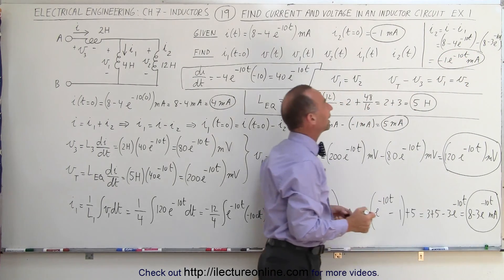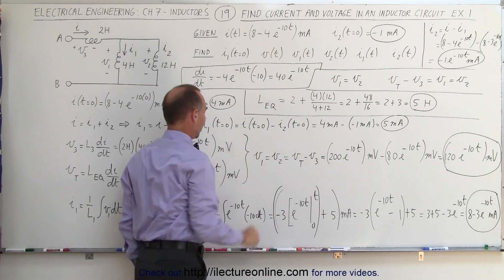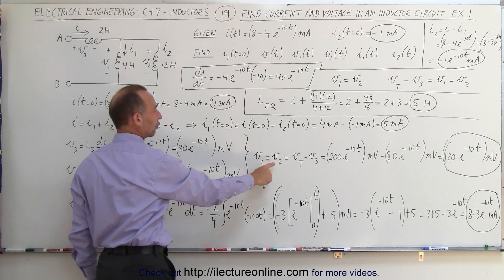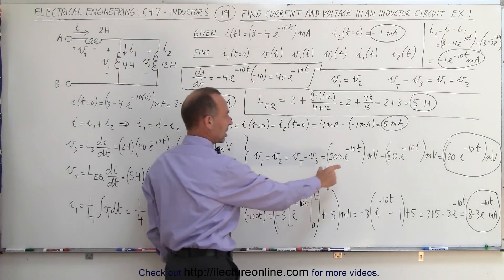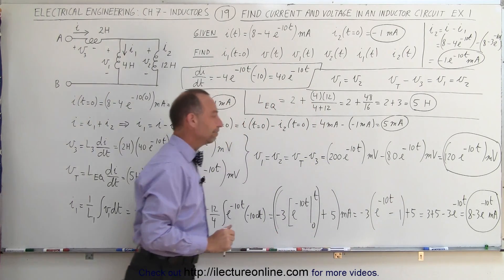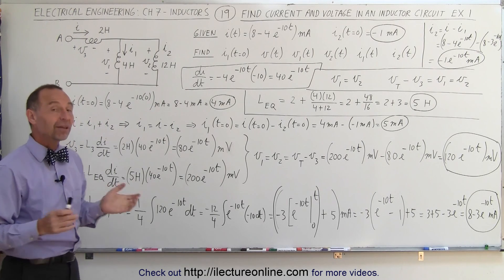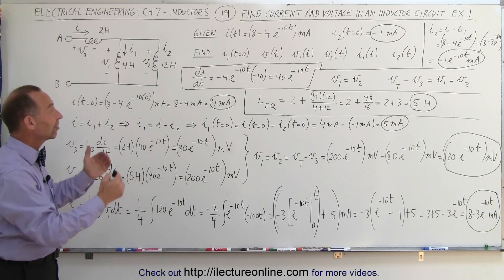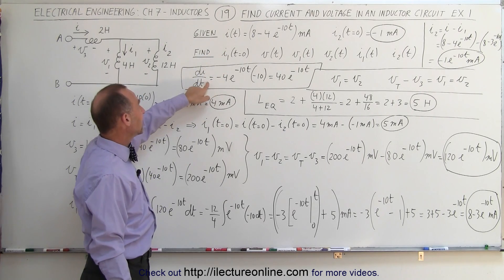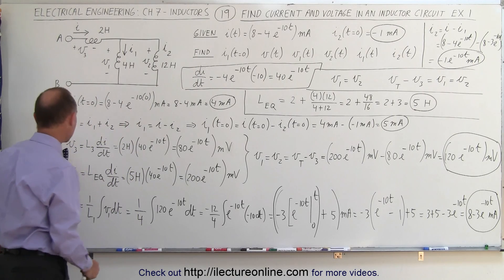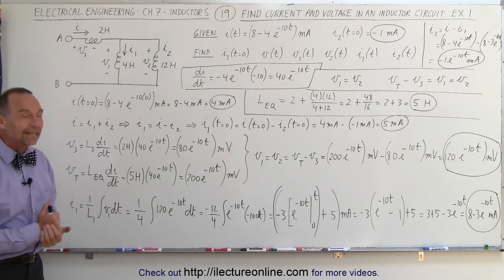So we now have all the parameters of this circuit: I2, I1, total current I, V1 equals V2 equals 120e to the minus 10t millivolts, V total equals 200e to the minus 10t millivolts, and V3 equals 80e to the minus 10t millivolts. Systematically, if you're given the current, you find di/dt, use it to find voltages, then integrate voltages to find currents through different parts of the circuit. That's how we do that.